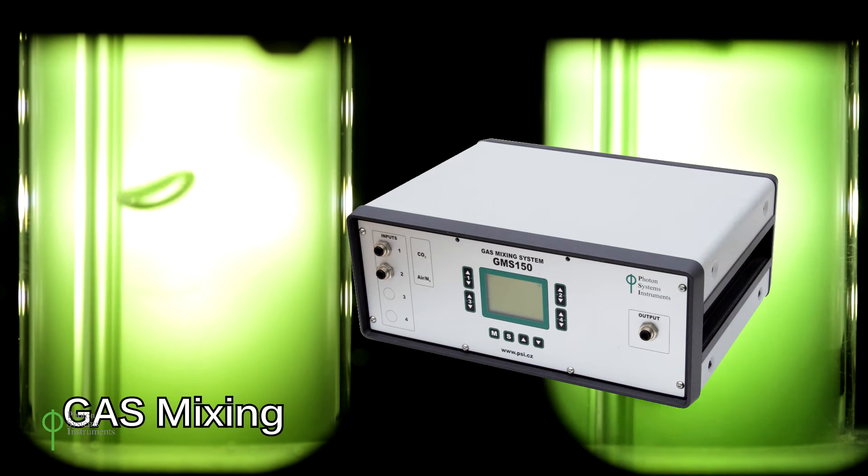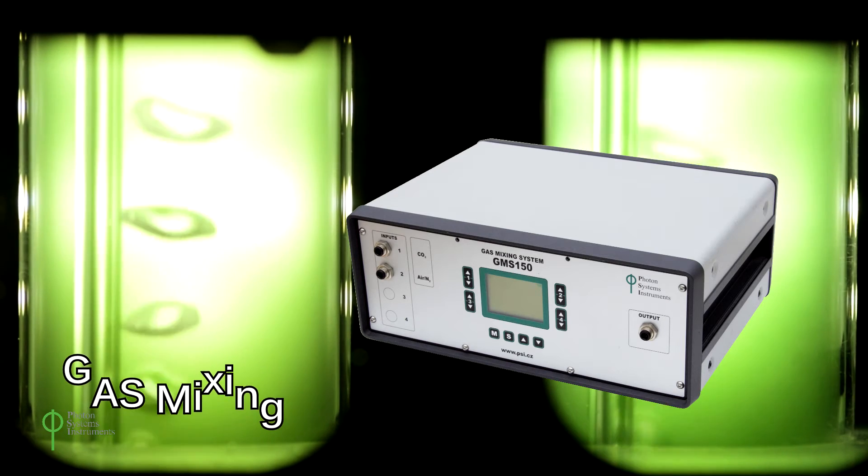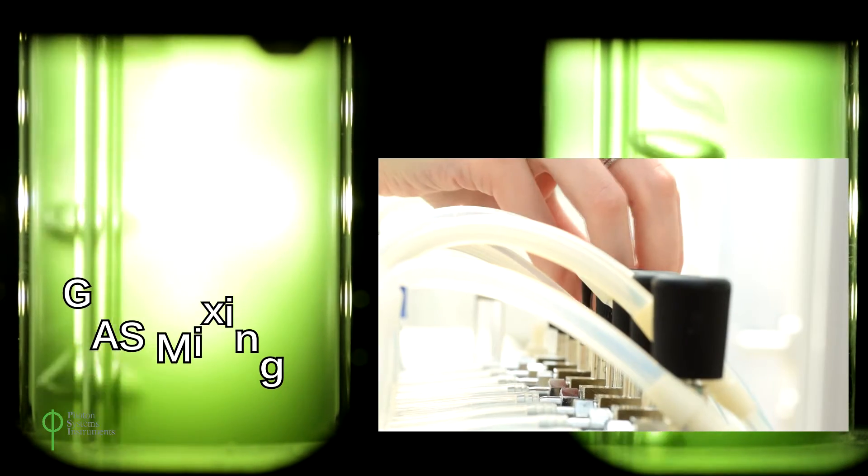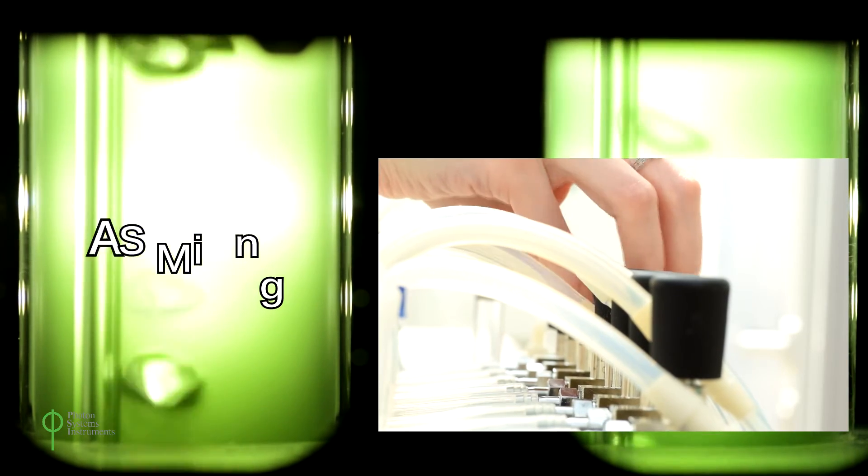Aeration is supplied by an integrated air pump or an additional gas mixing system. It provides mixing of the cultures. The flow rate can be adjusted for each vessel by a manually adjustable valve manifold.